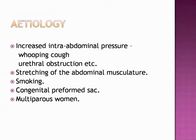Looking at the etiology of hernia, any condition that raises intra-abdominal pressure — such as a powerful muscular effort — can produce a hernia. For example, a person suffering from whooping cough or urethral obstruction requiring straining for micturition. When intra-abdominal pressure rises in these conditions, it can lead to hernia development. Secondly, stretching of the abdominal musculature due to increased contents is a factor. Smoking is also considered an etiological factor, as hernia is more common in smokers, possibly due to acquired collagen deficiency.